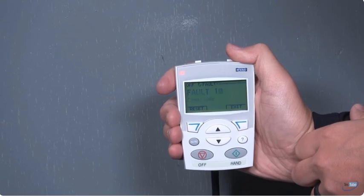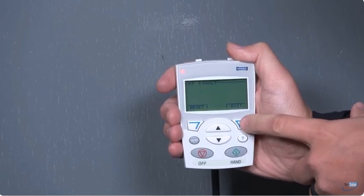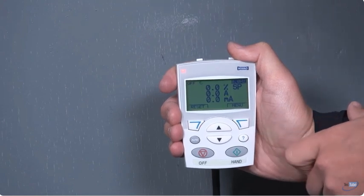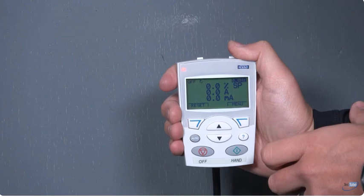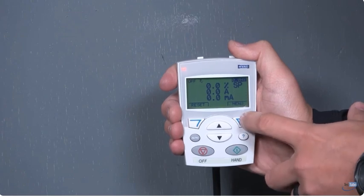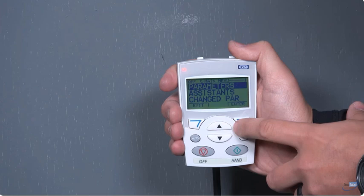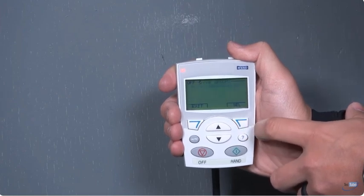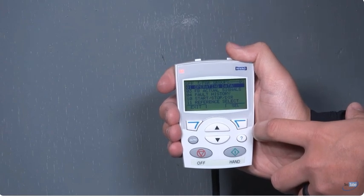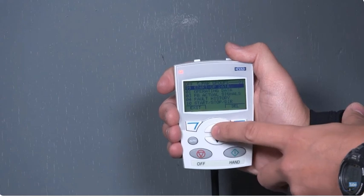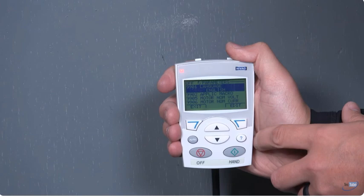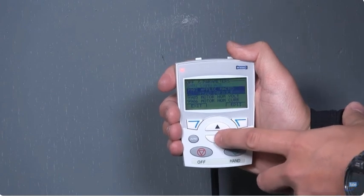Now we want to enter our parameters. What we always want to make sure before we enter our parameters: in the upper left corner, the VFD drive needs to be in off for it to accept our parameter changes. To enter the parameters, we select menu. Menu would be in the upper right corner, hit that arrow and parameters will be selected. Parameters is highlighted, hit the enter button. Now we're in a parameter section. First parameter we're going to go to is parameter 99.